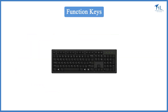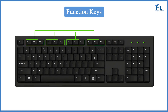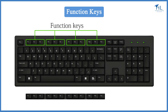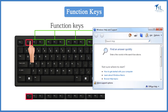The top row of the keyboard contains 12 function keys marked from F1 to F12. Every function key has a unique role and meaning. For example, pressing the F1 key opens the help of the application you are using.